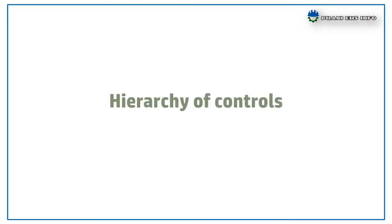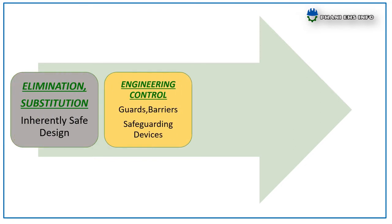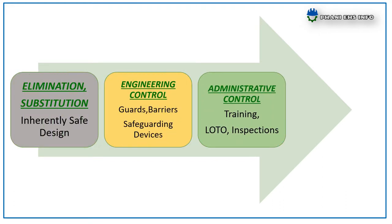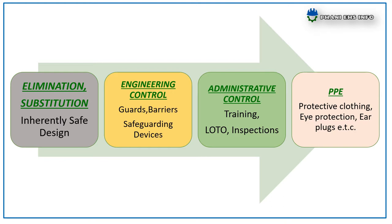The hierarchy of mechanical safety controls: the first step is elimination, which means inherent safety design. The second step is engineering control, which covers guards, barriers, safeguards, devices, etc. Next is administrative control, which means trainings, lockout/tagout system, inspections, etc. And finally PPE — examples include protective clothing, eye protection, ear protection, etc.